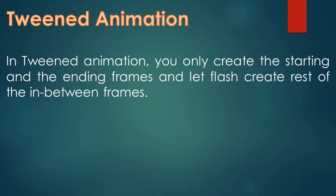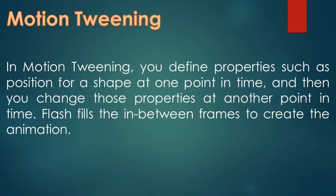In tweened animation, you only create the starting and ending frames and let Flash create the rest of the in-between frames. In motion tweening, we define the shape properties — position and size — at one point, then define the other endpoint, and Flash creates the animation in between.